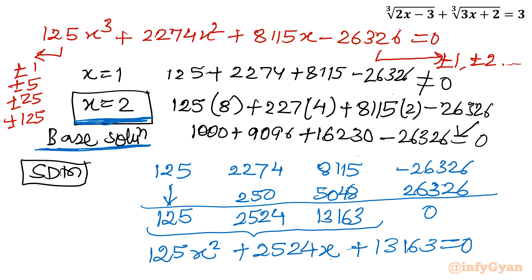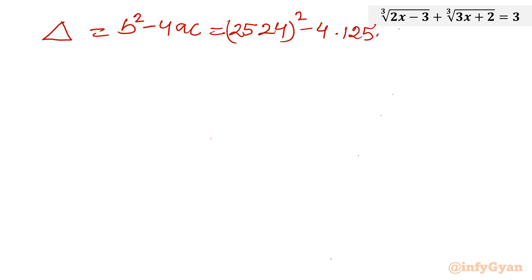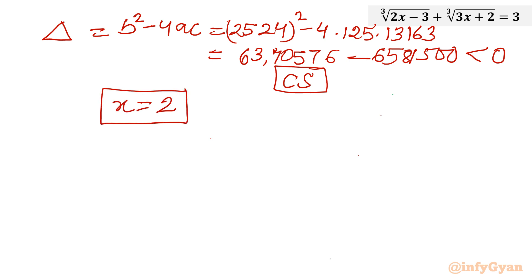The base solution x = 2 is a real-valued solution. Now I check whether the quadratic yields real solutions by computing the discriminant Δ = b² - 4ac = (2524)² - 4(125)(13163) = 6370576 - 6580815, which is negative. So complex solutions result, meaning x = 2 is the only real solution.